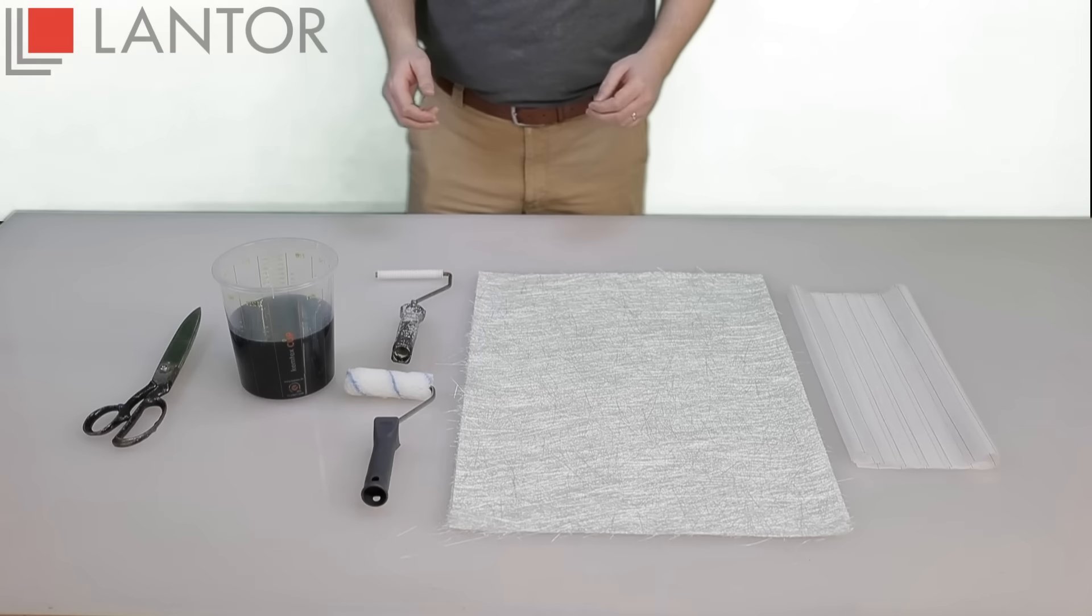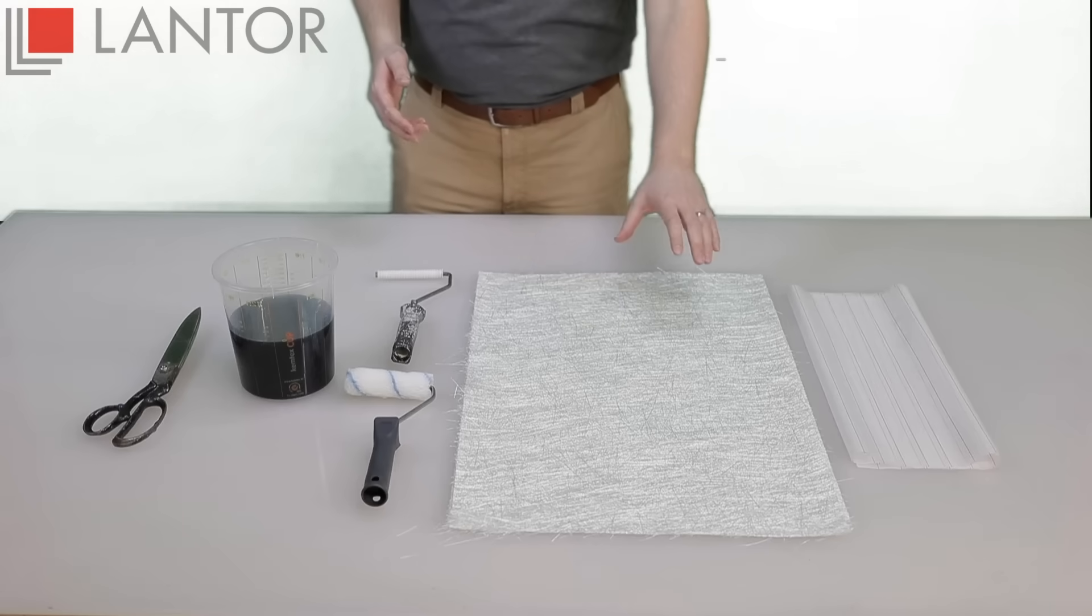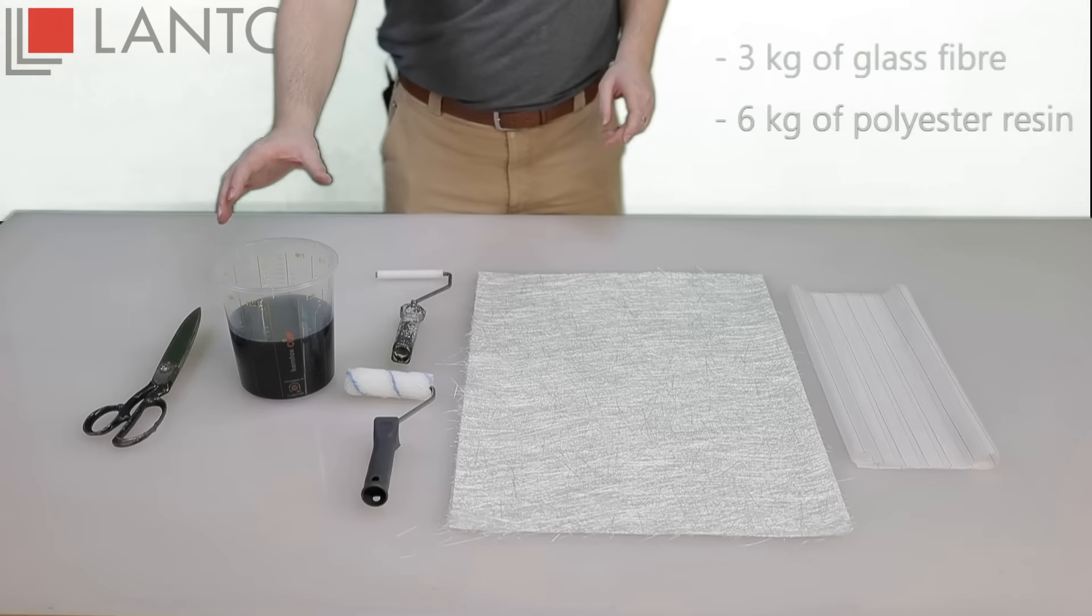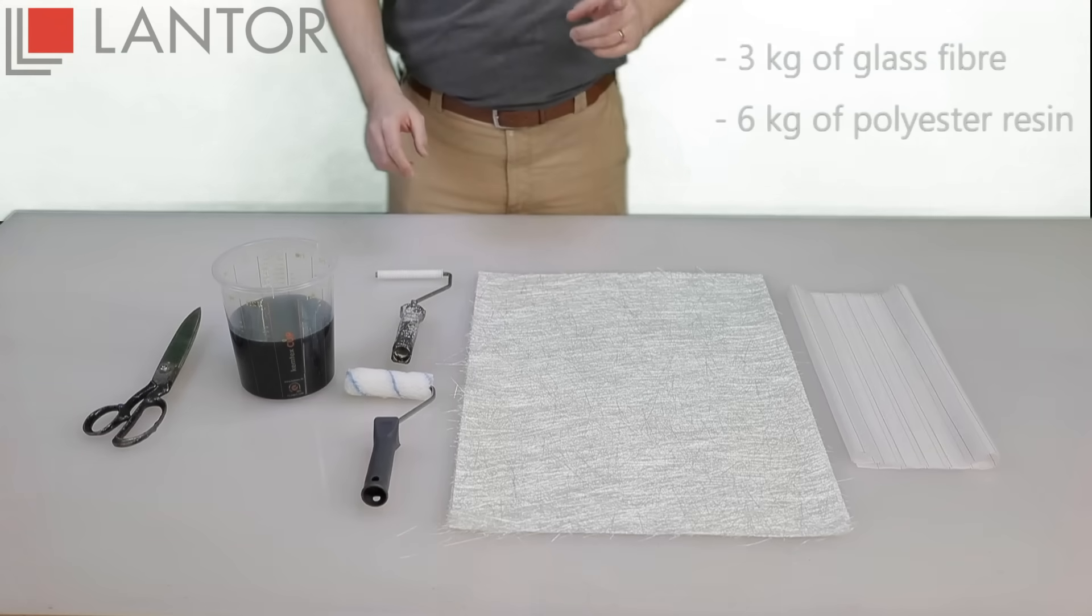All quite simple and straightforward so far, but the layout uses almost three kilograms of glass fiber and a whopping six kilograms of resin per square meter just for this one panel. And that's where core mat comes in.